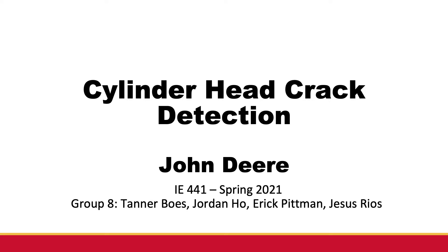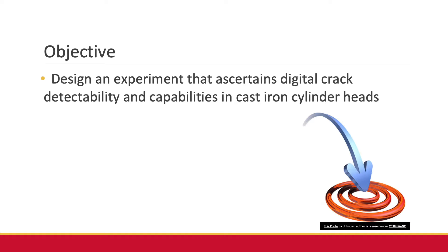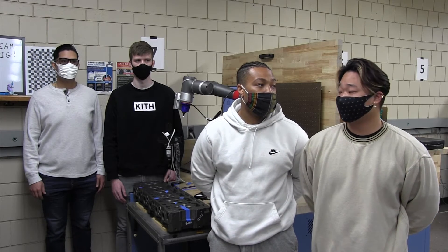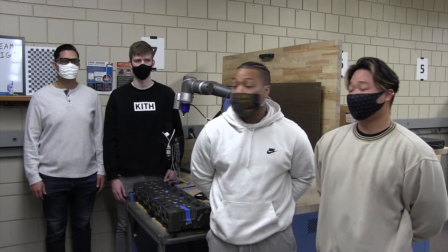We're Group 8. We work with John Deere on cylinder head crack detection. Our objective is to design an experiment that ascertains digital crack detectability and capabilities in cast iron cylinder heads. For senior design, we are looking at surface cracks on used cylinder heads. We're doing this to foster remanufacturing in the industry, using a monochrome camera and other factors to look at these surface cracks.